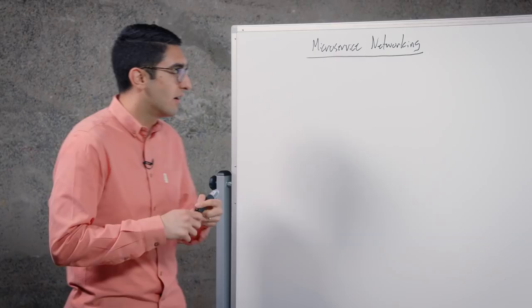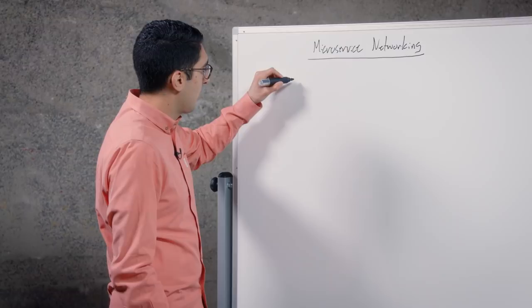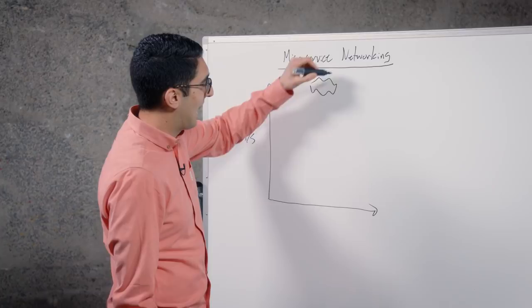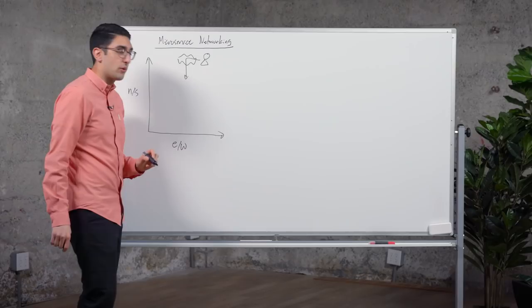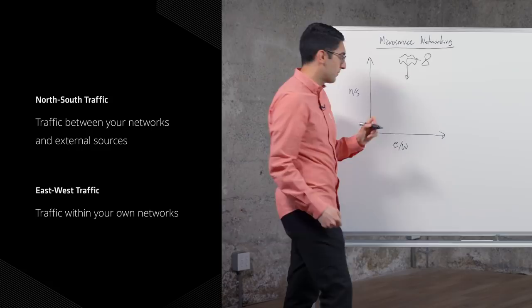When we talk about microservices networking and the challenges associated, it's useful to step back and look at the bigger network. There are two key network paths to talk about. One is north-south. That's traffic flowing from the public internet and our end users into our networks versus east-west, which is traffic flowing within our data center between different services.